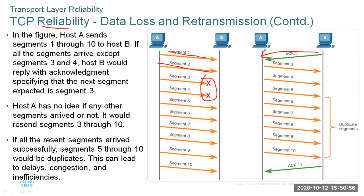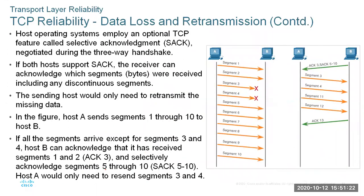Once host A receives notification that segment 3 is expected, it resends segments 3 through 10, since it has no idea if any other segment arrived or not. If all recently sent segments 5 through 10 arrive successfully, they would be duplicates. This can lead to delay, congestion, and inefficiencies. Most modern operating systems employ a TCP feature called Selective Acknowledgement (SACK), negotiated during the three-way handshake, which allows the receiver to acknowledge discontinuous segments.